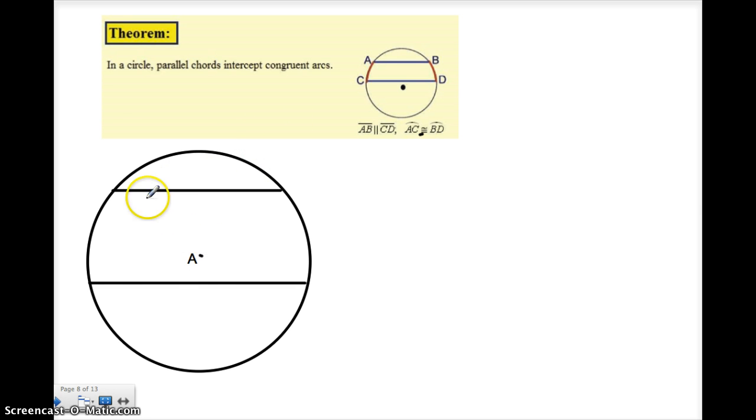If we look at this circle over here, if I know that this chord is parallel to this chord, and we mark that with these little triangles or arrows, then I know that this segment right here is going to be congruent to this segment or arc over here. So I could say that these are congruent.